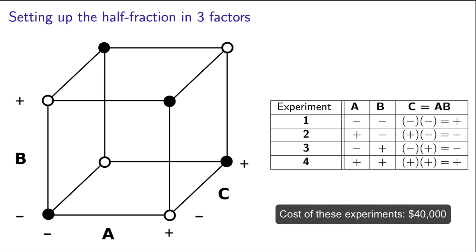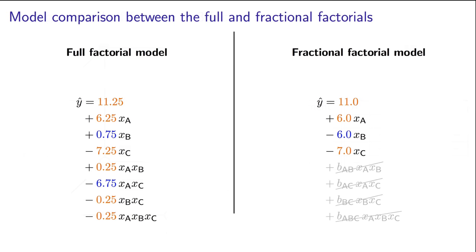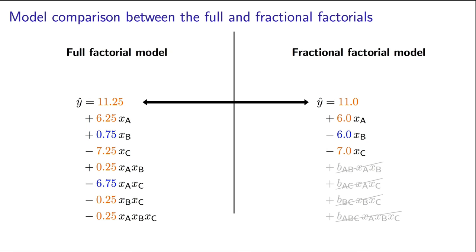I mean, if we had paid an extra $40,000 and did the extra 4 experiments, we'd have that extra information. You can already see that over here. We had some good estimates of the three parameters: the intercept, the A main effect, the C main effect, but the B main effect was actually quite wrong. Also you notice that we didn't get any estimates of the two factor interactions.